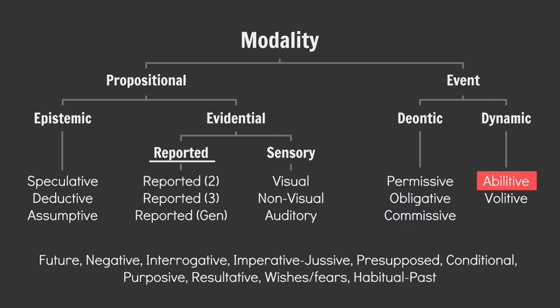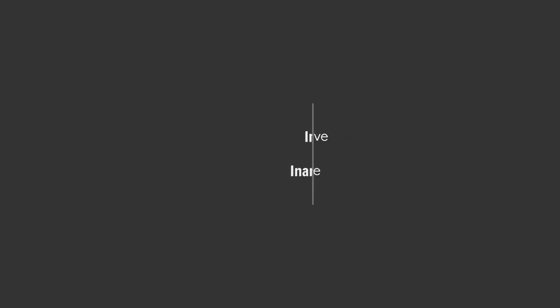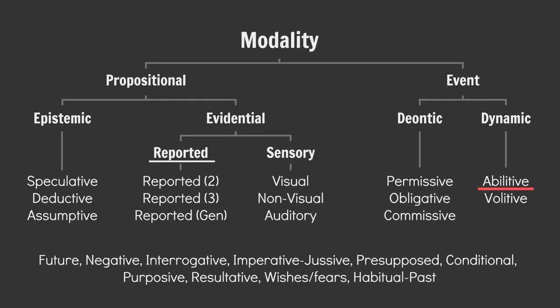Now, abitative modality expresses ability, and volative modality deals with willingness. 'Inara can run fast' — Inara has not been given permission to run fast; rather, she has the ability to do so — abitative modality. 'Inara will let you stay' — this could be referring to Inara's willingness to let people stay in her house — volative modality. Simple. Dynamic abitative and dynamic volative — done.